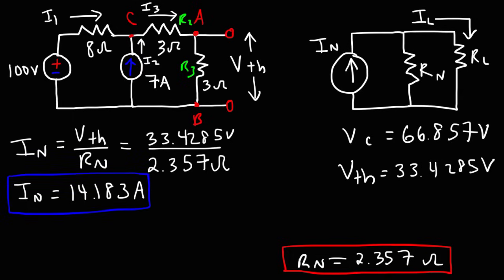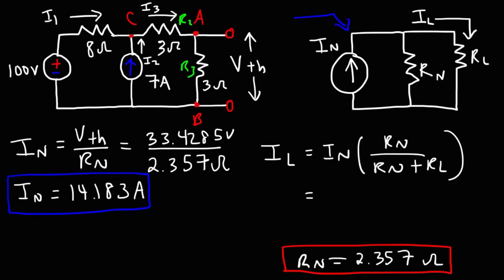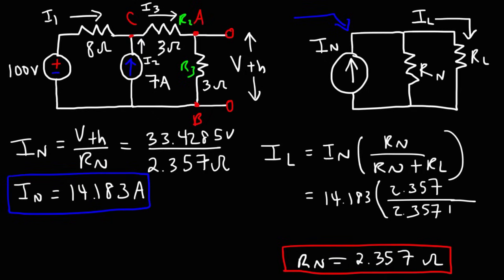Now that we have the Norton's current, we can use the equivalent circuit to calculate the current through the load resistor. This circuit forms a current divider. The current through RL is the Norton current times Rn / (Rn + RL). So: 14.183 × 2.357 / (2.357 + 6) = 14.183 × 2.357 / 8.357. The current flowing through the load resistor is 4 amps.